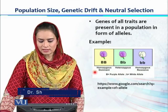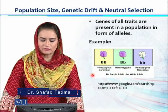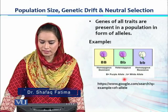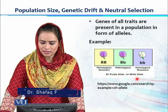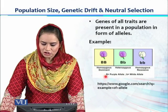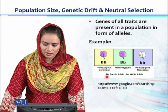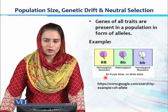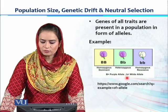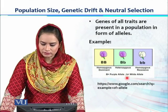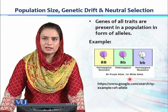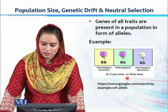Consider the color of a flower. We have purple flowers and white flowers. The gene responsible for flower color is called B. Capital B is the dominant gene and small b is the recessive gene. These two forms are called alleles — they are allelic to each other.